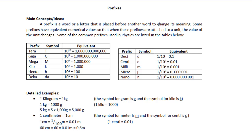In the SI system of units, when we talk about length, our standard unit is meter. For example, the height of a mango tree is two meters. The distance from your house to the market is 2,000 meters, and the length of your nail is 0.005 meter.